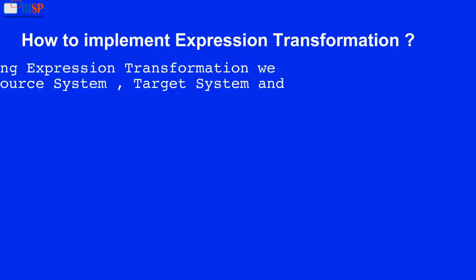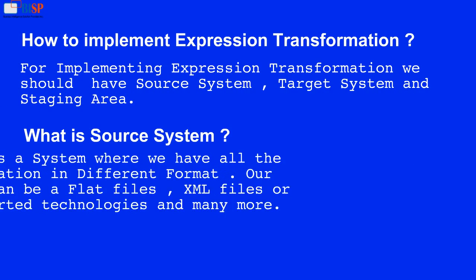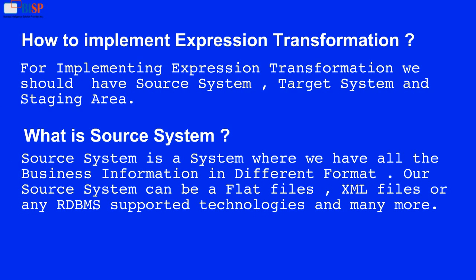How to implement expression transformation? For implementing expression transformation we should have a source system, target system, and staging area. What is a source system? A source system is a system where we have all the business information in different formats. Our source system can be flat files, XML files, or any RDBMS-supported technologies, and many more.